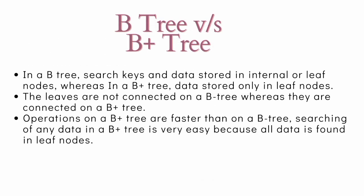The major difference between the B tree and the B plus tree are, in a B tree, search keys and data are stored in the internal or the leaf nodes, whereas in the B plus tree, the data is stored only in the leaf nodes.